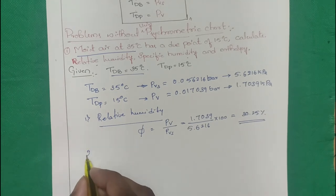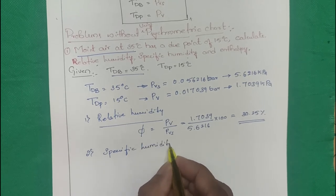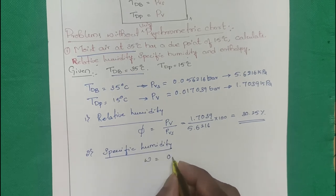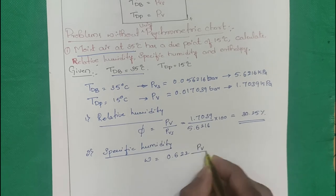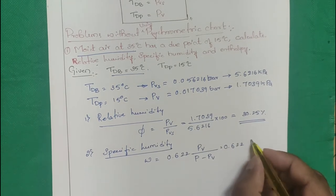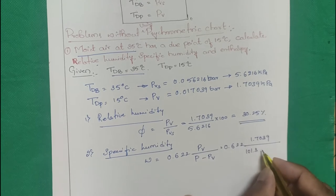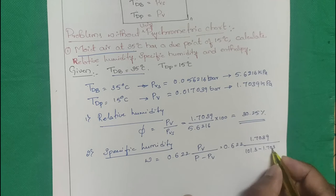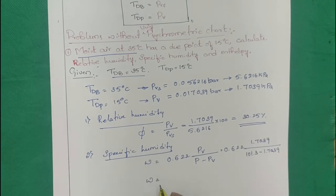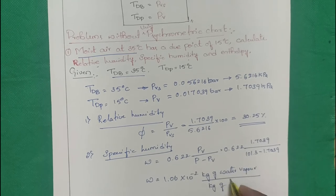Step 2 — Specific humidity: W = 0.622 × PV / (P − PV) = 0.622 × 1.7039 / (101.3 − 1.7039). Total pressure P = 101.3 kPa. Result: W = 1.06 × 10⁻² kg of water vapor per kg of dry air.